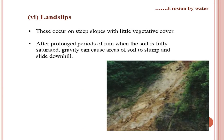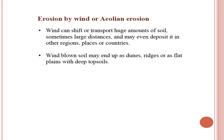Land slips occur on steep slopes with little vegetative cover. After prolonged rain when soil is fully saturated, gravity can cause areas of soil to slump and slide downhill, deposited at the foot of hills. Wind (aeolian) erosion: besides water, soil is also eroded by wind. Wind can shift and transport huge amounts of soil over large distances — sometimes to other regions or countries. This is common in Arabic countries, and in India it is common in Rajasthan. Wind-blown soil may end up as dunes, ridges, or flat plains with deep topsoils.